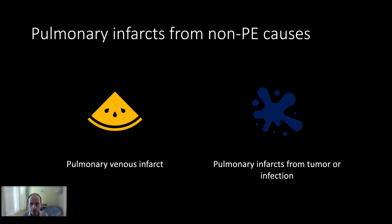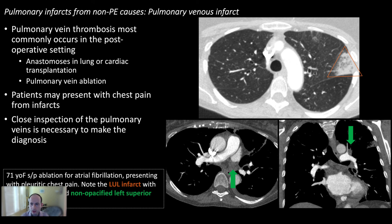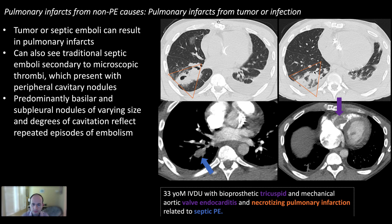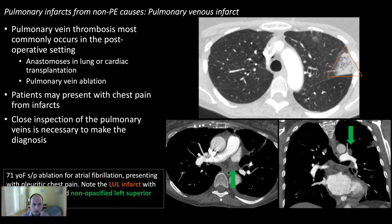Finally, pulmonary infarcts not caused by PE. If you see a wedge-shaped area of consolidation in the lung, definitely think about PE, but there are other causes. Here is a patient who recently underwent atrial fibrillation ablation presenting with chest pain, showing a peripheral wedge-shaped consolidation with a reverse halo sign — very classic for pulmonary infarct. There was no pulmonary arterial embolus, but the left superior pulmonary vein was entirely thrombosed. If you see an infarct without a pulmonary embolism, look for an obstructing venous cause, or tumor.